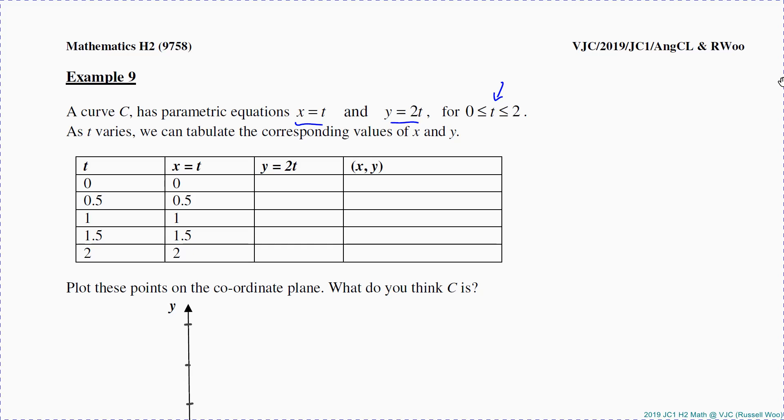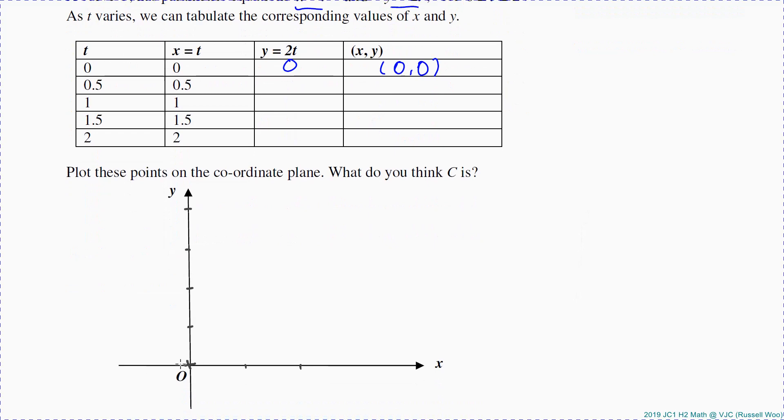If I tell you a curve can be defined by this pair with t taking on between 0 and 2, what it means is I can substitute t equal to 0, then my x is 0, my y is 0, which means (0, 0) is a point on the curve.